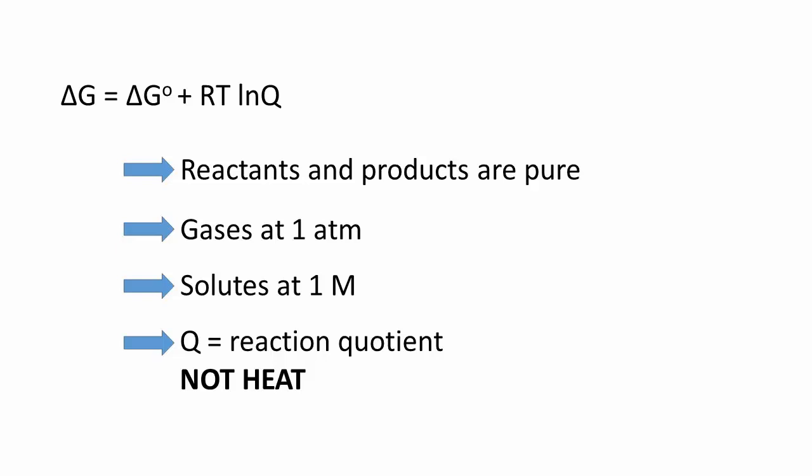By playing with the value of Q, reactions can be made to go either forwards with a sufficiently small value for Q, or backwards with a sufficiently large value for Q.